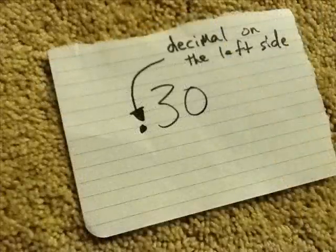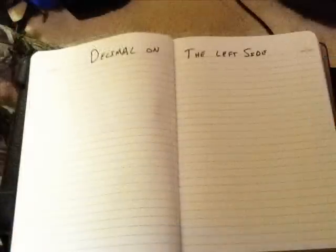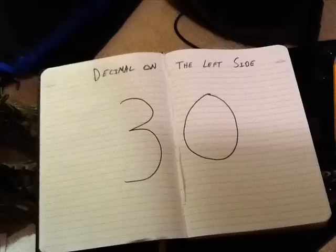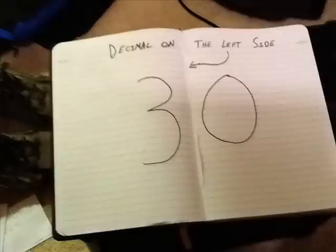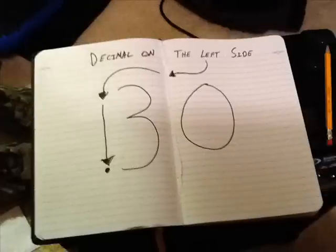Take your numerator, it is easy as pi. Now drop the denominator, put the decimal on the left side. Put it on the left side — check it, bam.